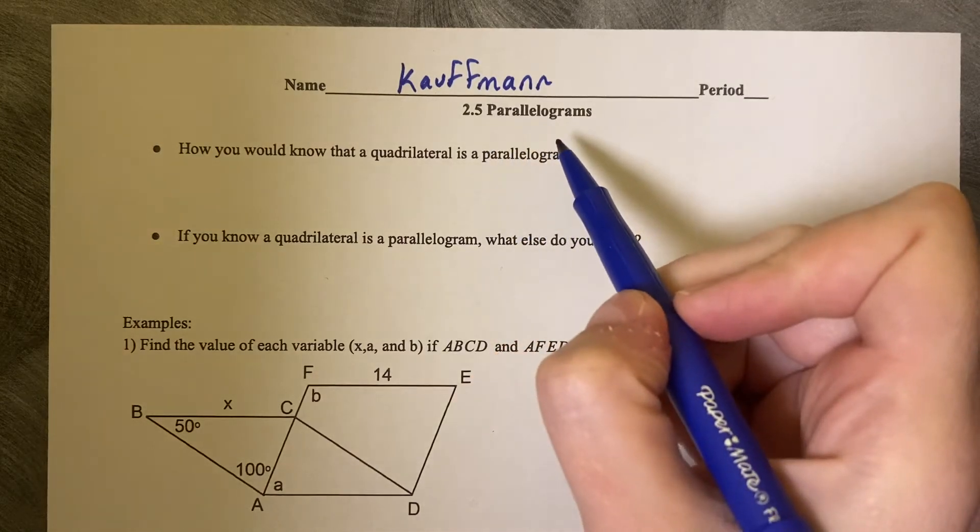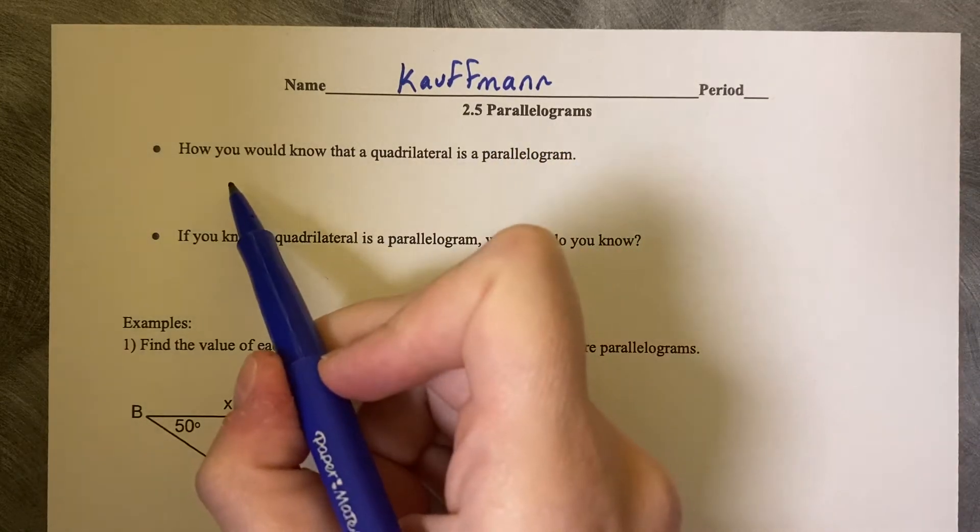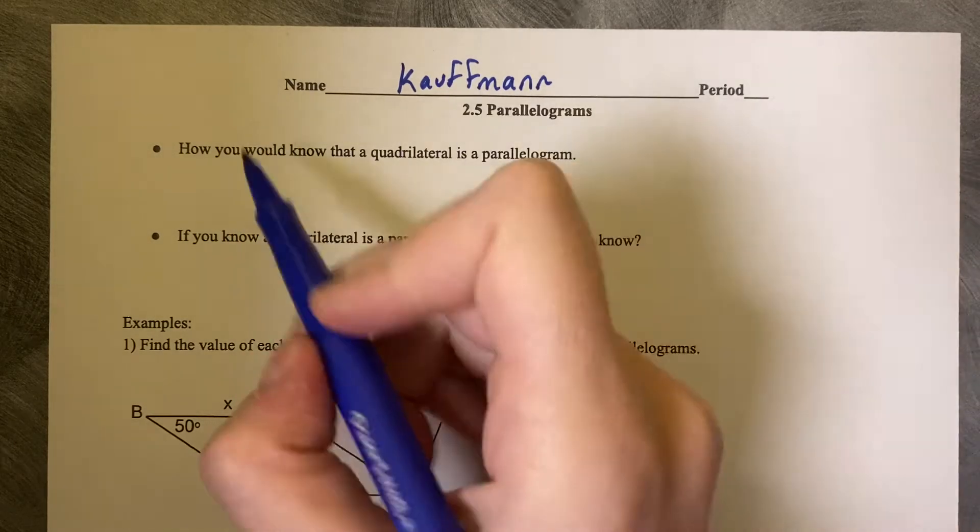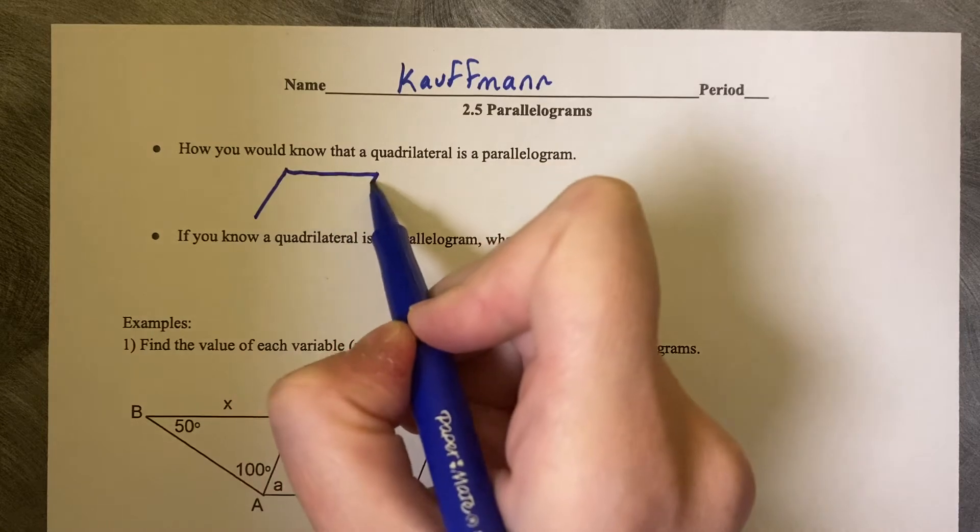2.5 parallelograms. How would you know that a quadrilateral is a parallelogram? Well, if you had a quadrilateral, that's a four-sided figure.